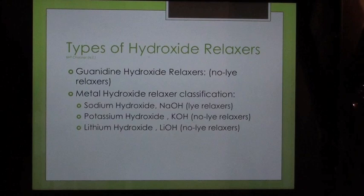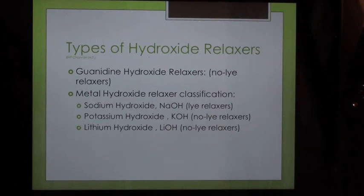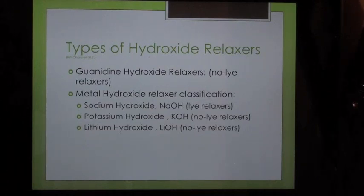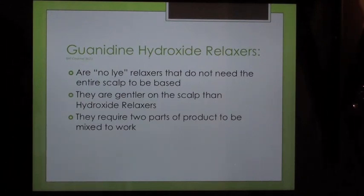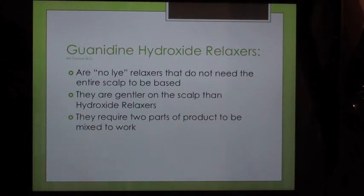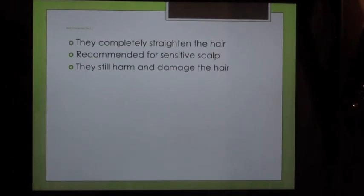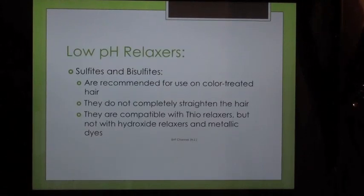Types of hydroxide relaxers: Guanidine hydroxide relaxers are no-lye relaxers. Metal hydroxide relaxer classification — sodium hydroxide: lye relaxers; potassium hydroxide: no-lye relaxers; lithium hydroxide: no-lye relaxers. Guanidine hydroxide relaxers do not require the entire scalp to be based, are gentler on the scalp, require two parts to be mixed, completely straighten the hair, are recommended for sensitive scalp, but still harm and damage the hair.